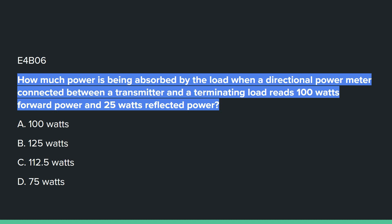E4B06: How much power is being absorbed by the load when a directional power meter connected between a transmitter and terminating load reads 100 watts forward power and 25 watts reflected power? Answer D: 75 watts.